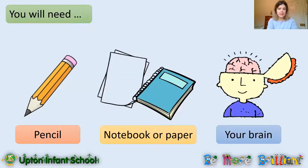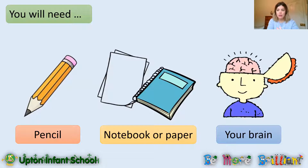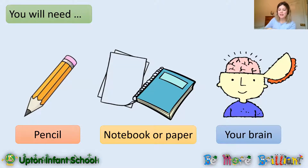So what do you need today? You need a pencil and colouring pencils, but don't worry if you don't have them. You need a notebook or paper — if you're at school that's your topic book, and if you're at home that's your home learning book — and you're also going to need your science brain. We've been using our science brain so much this week, so I'm sure it's ready to go.